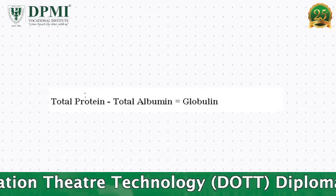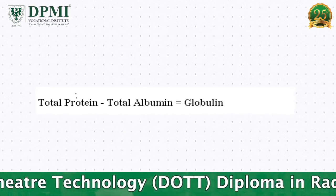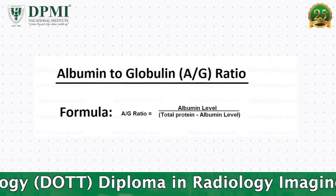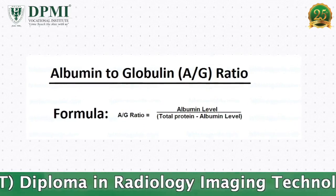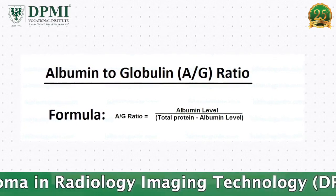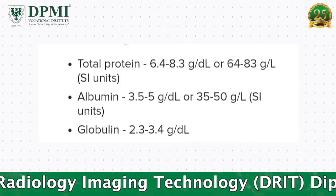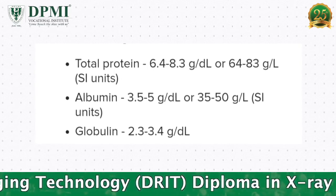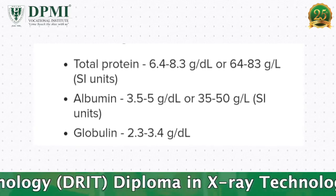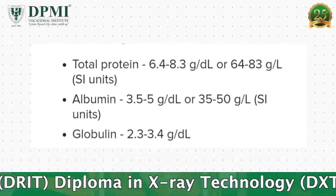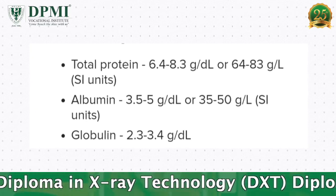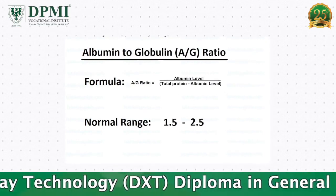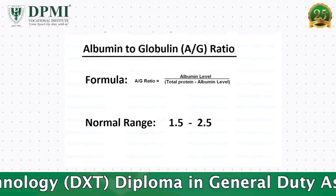Serum Globulin is calculated by subtracting Albumin concentration from total protein concentration. The A to G ratio is calculated by dividing the value of Albumin level by Globulin level. Normal serum Albumin concentration is 3.3 to 4.8 g/dL. Normal serum Globulin level is 1.6 to 3.6 g/dL. Normal A to G ratio is 1.2:1 to 2:1.